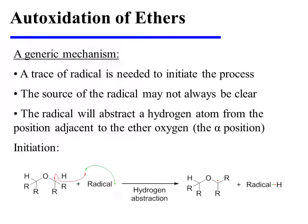A trace of radical is needed to initiate the process. The source of this radical may not always be clear, but nevertheless, the radical will abstract a hydrogen atom from the position that is adjacent to the ether oxygen, or the alpha position. This results in a carbon-centered radical.